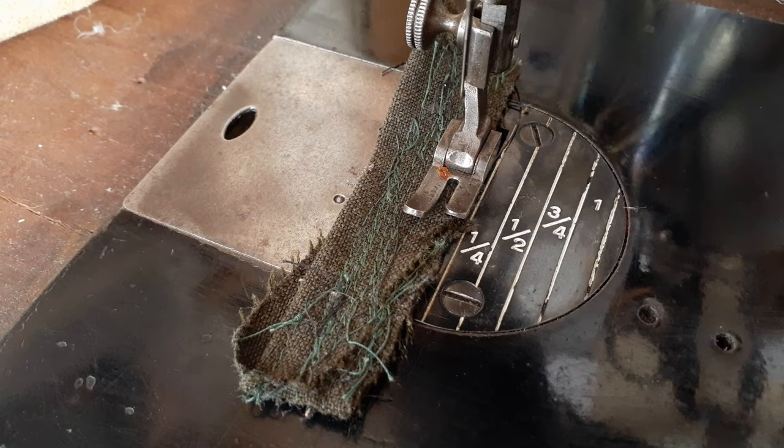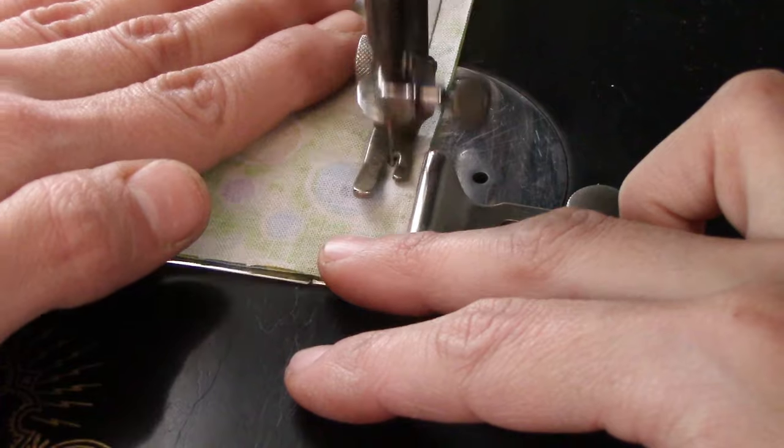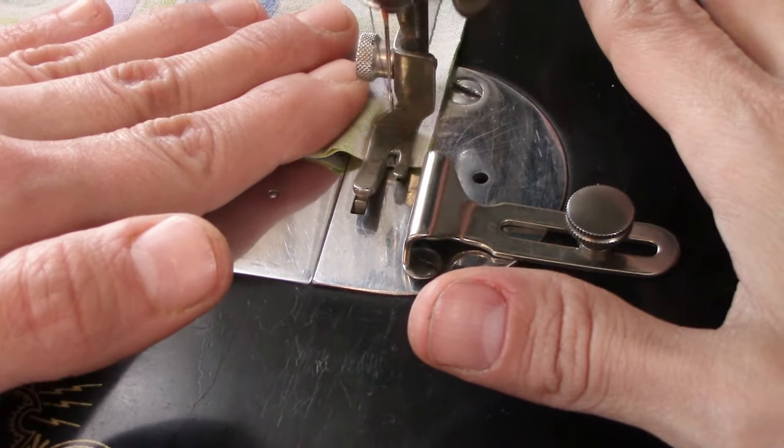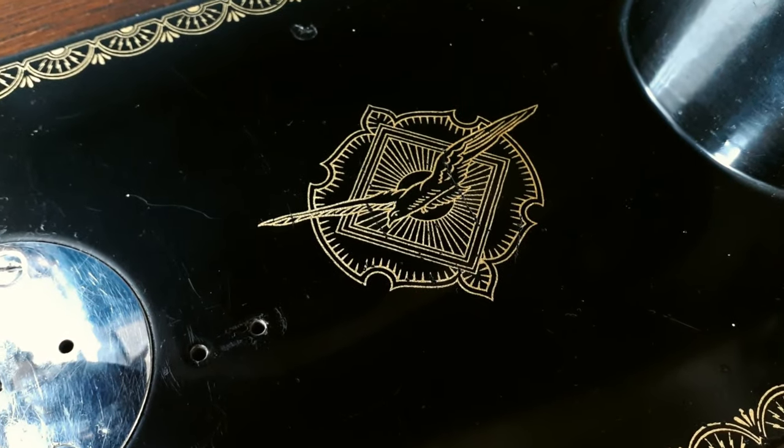Later, needle plates were made with imprinted measures, allowing you to visually gauge your seam allowance and doing away with some of the need for this attachment. However, if you are running a large volume of fabric through, this guide means that you don't have to watch it like a hawk. Or is that an eagle?